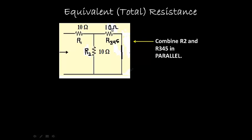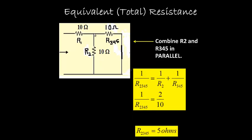They're in parallel. There's a junction here. If you can't see that, you could swing this over here and maybe it would be easier for you to see that they are in parallel. We use the proper parallel formula and we'll end up with R2345 being 5 ohms.